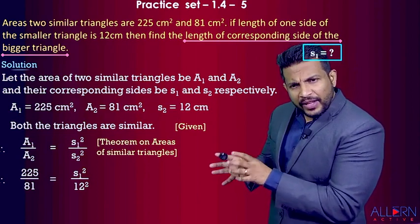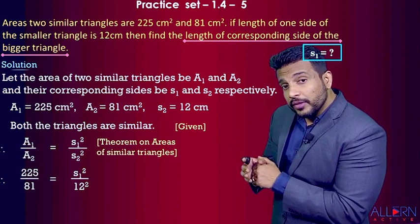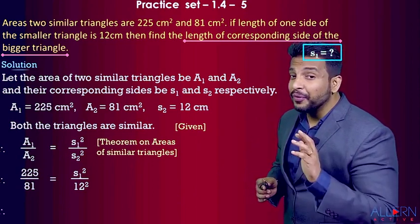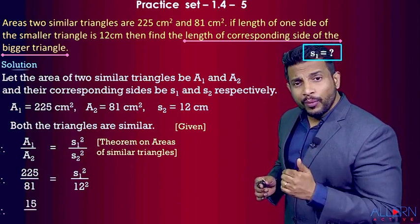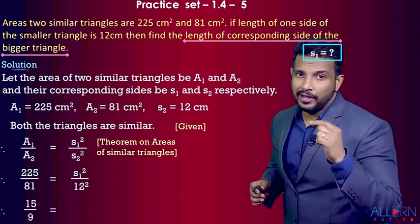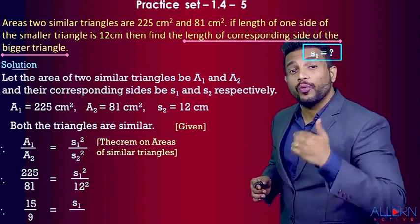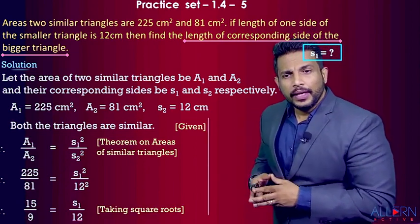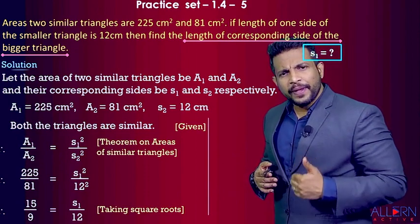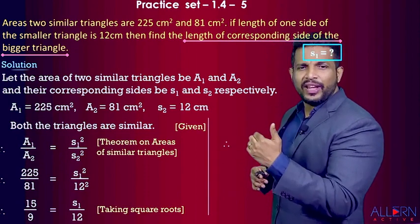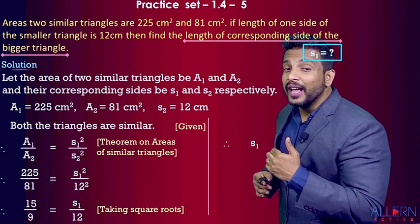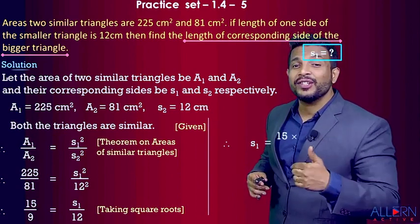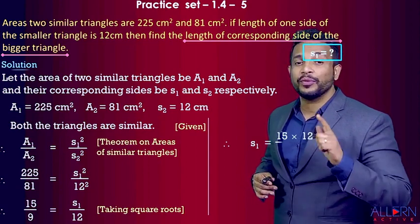Our objective is to find s1, but we have s1² in the equation, so we take the square root on both sides. The square root of 225 is 15, the square root of 81 is 9, the square root of s1² is s1, and the square root of 12² is 12. So we get 15/9 = s1/12.